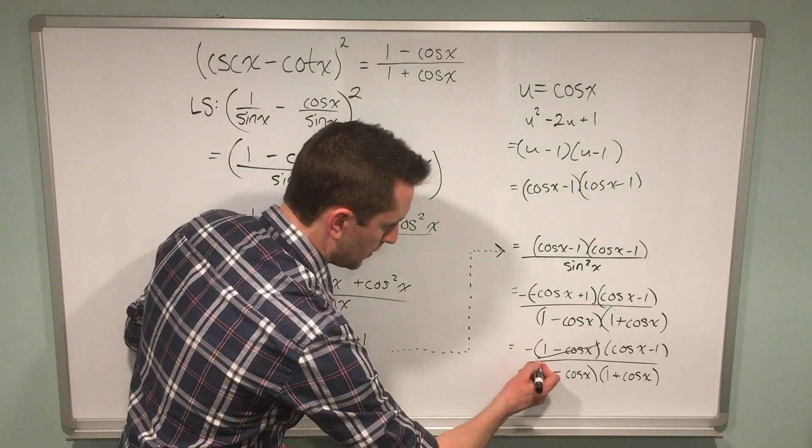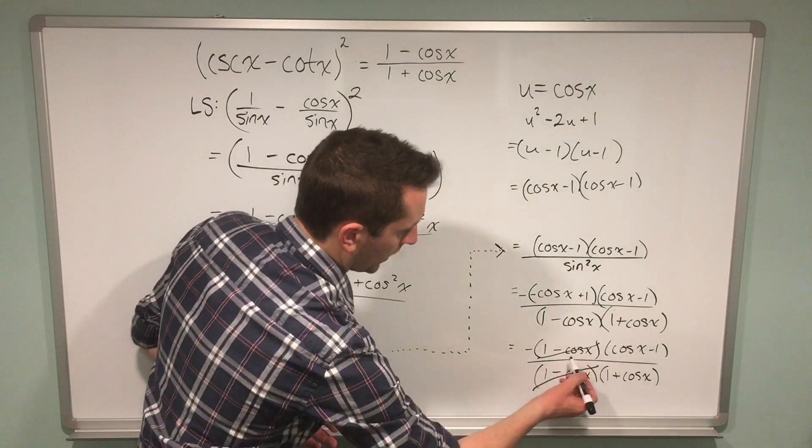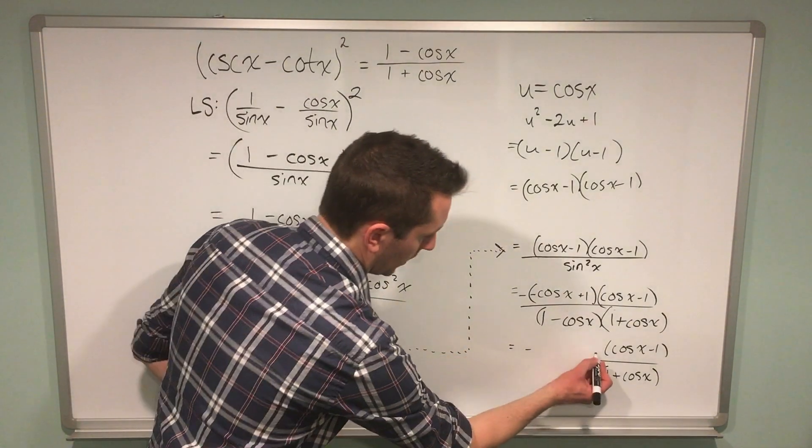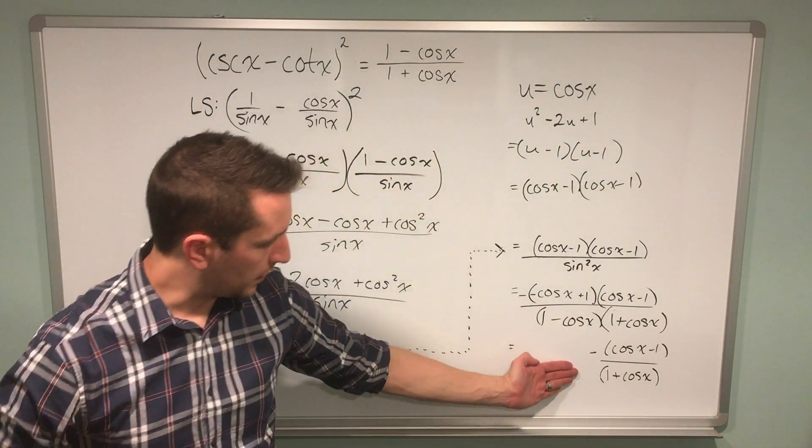At this point I can cancel these two expressions because I'm multiplying in both the numerator and denominator. With those two expressions gone and this negative still in front of my expression, I end up with something like this.